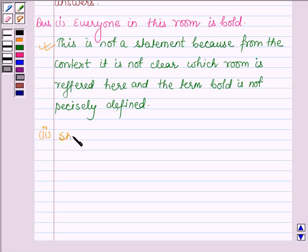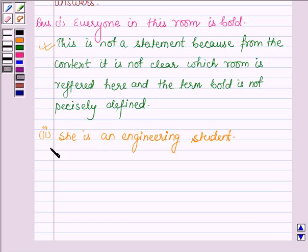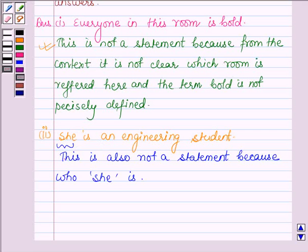She is an engineering student. This sentence is not a statement because who 'she' is is not precisely defined. Therefore, the reason is that who 'she' is is not defined here.